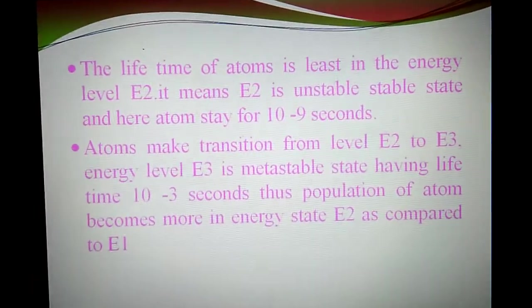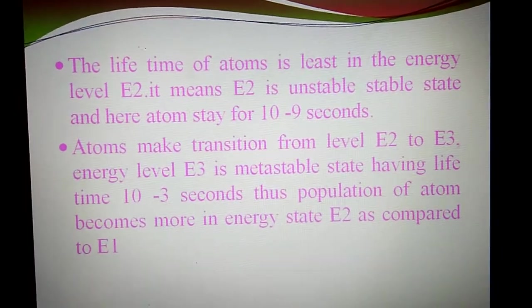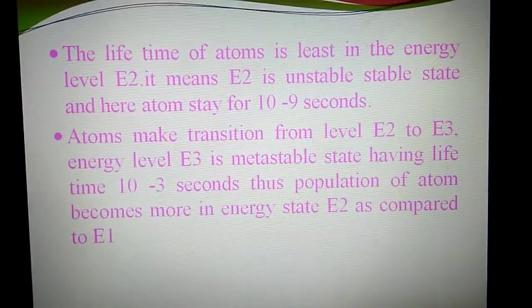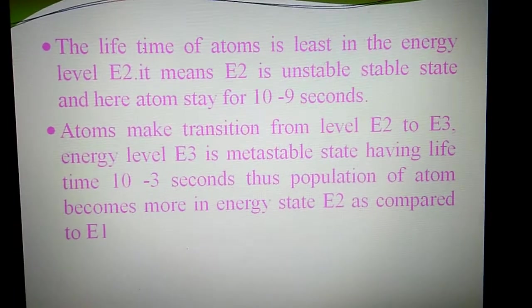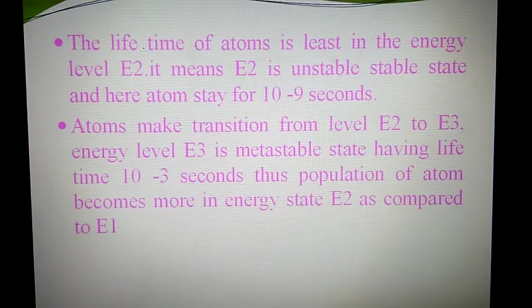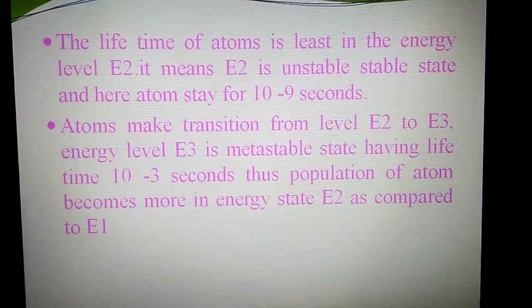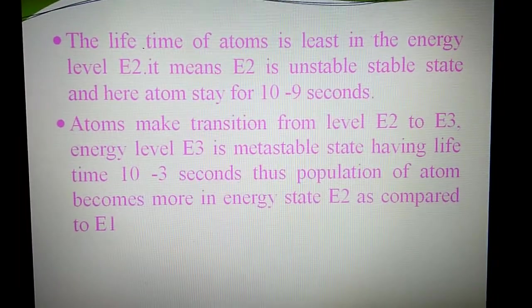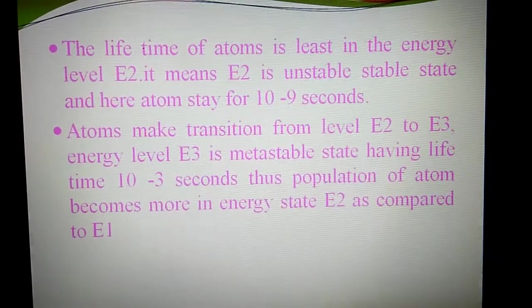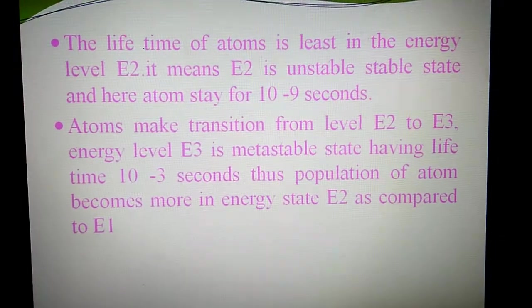The lifetime of atoms in energy level E2 is 10 to the power minus 8 to 10 to the power minus 9 seconds. It means E2 is unstable state. Atoms make transition from level E2 to E3. Energy level E3 is the metastable state having lifetime 10 to the power minus 3 seconds, thus the population of atoms becomes more in energy state E2 as compared to E1.